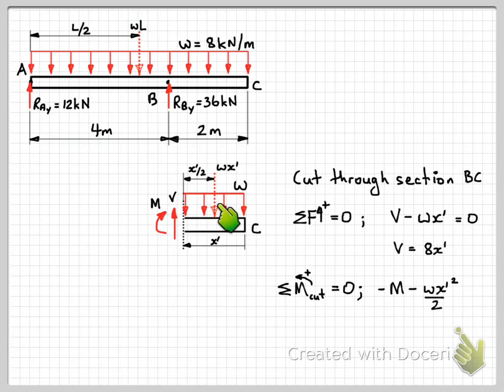So w x dash times its distance x dash over 2, and it's also going clockwise about the cut end. And that's all equal to zero, so we can rearrange that and get our equation for the bending moment for section BC equals minus 4x dash squared.